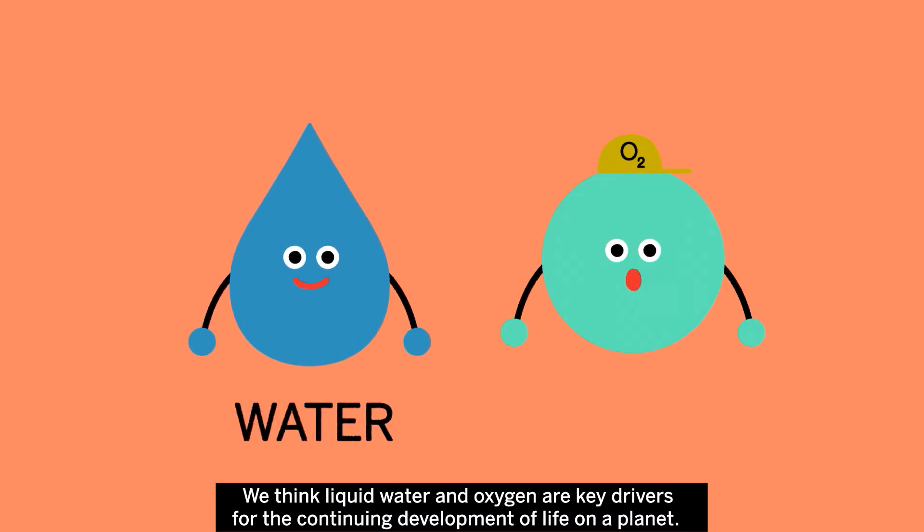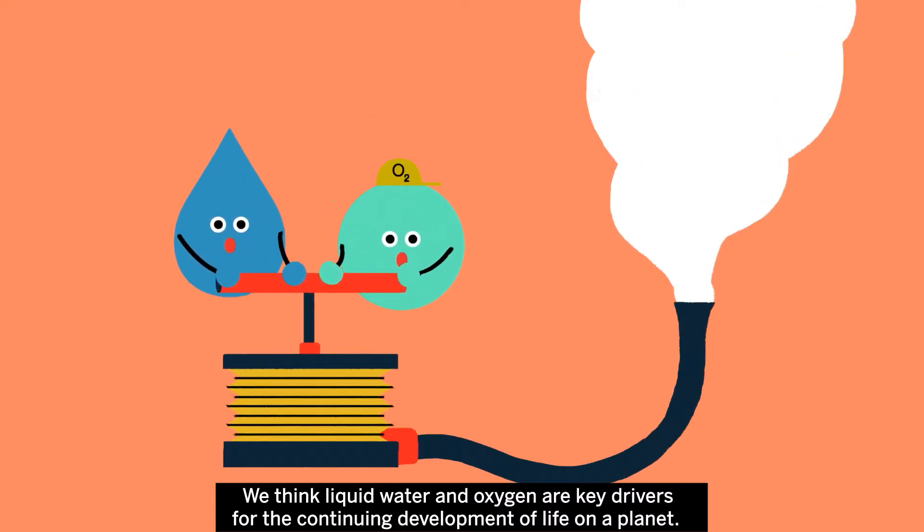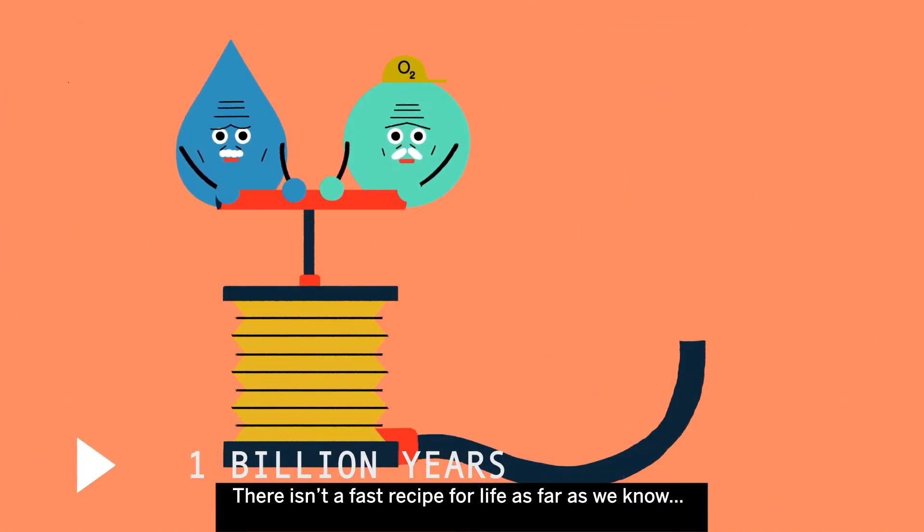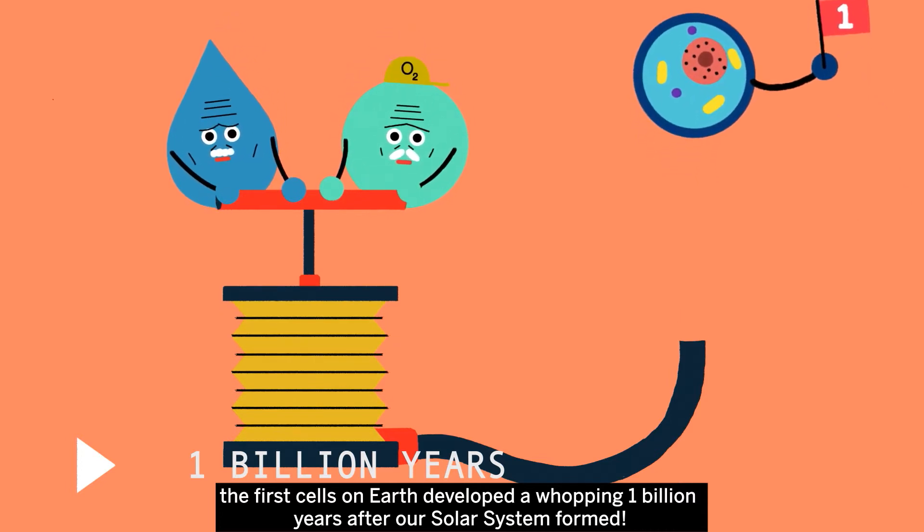We think liquid water and oxygen are key drivers for the continuing development of life on a planet. There isn't a fast recipe for life. The first cells on Earth developed a whopping 1 billion years after our solar system formed.